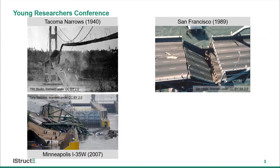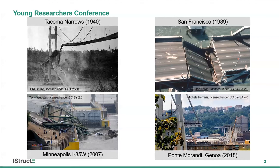Even more recently, the I-35 bridge in Minneapolis collapsed in 2007 — a much more significant disaster resulting in 13 people dying and almost 150 people being injured. Then, one that probably stands out in all of our minds is the major bridge collapse in Italy in 2018, which resulted in 43 people being killed and around 600 people left homeless. While some of these collapses result from flaws during the design stage, what we're seeing more and more is bridges collapsing because of inadequate maintenance budgets, inspection regimes, and bridges reaching or exceeding their design lives.